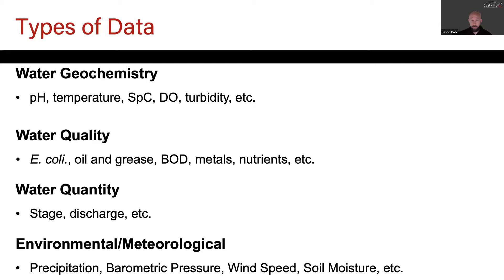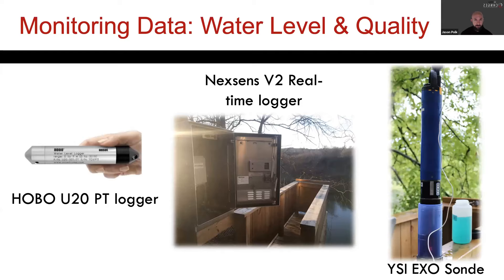For water quantity, a lot of that gets built into data collection with the sonde — we collect water level and then do discharge measurements to create rating curves and convert those over to get good continuous discharge. That lets us look at things like loadings of different parameters and understand water quality as conditions change. We also do a lot of environmental or meteorological collection: rainfall amount, barometric pressure, wind speed, soil moisture, etc., which we use for additional calculations tied back to water quality and quantity.